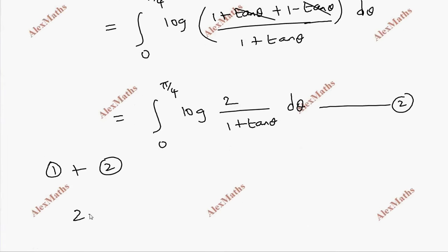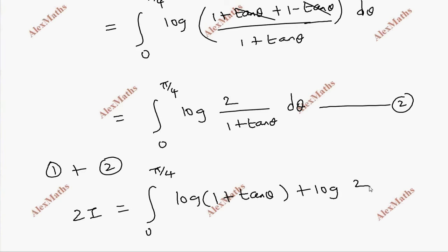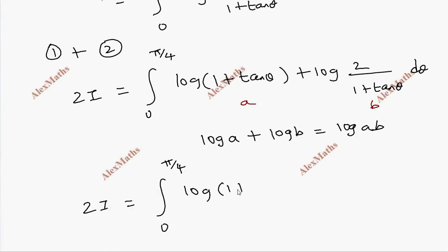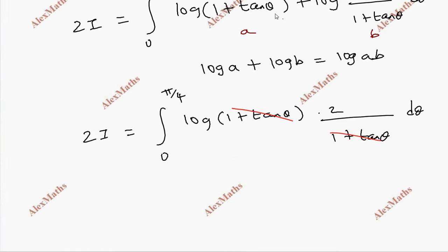Adding the two expressions for I: 2I equals integral from 0 to π/4 of log(1 plus tan θ) plus log(2 divided by (1 plus tan θ)) dθ. Applying the log product rule (log a plus log b equals log ab), the (1 plus tan θ) terms cancel, leaving log 2. Since log 2 is a constant, 2I equals log 2 times the integral from 0 to π/4 of dθ.